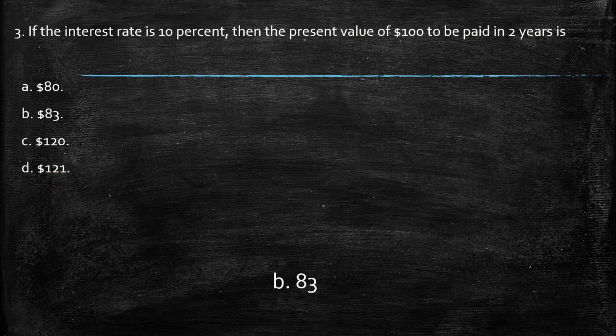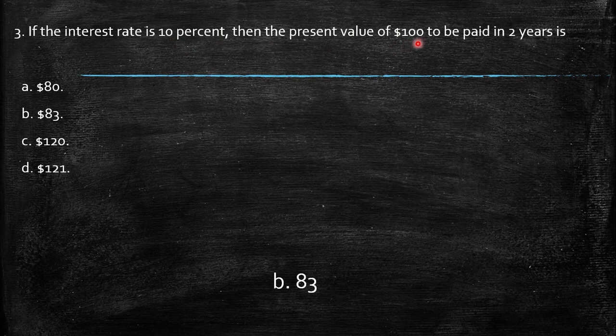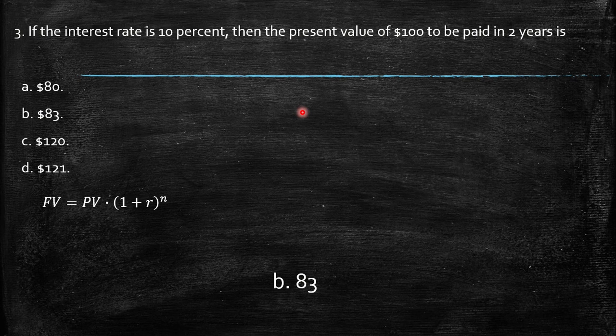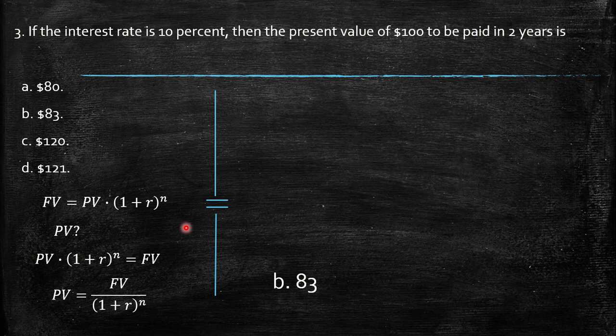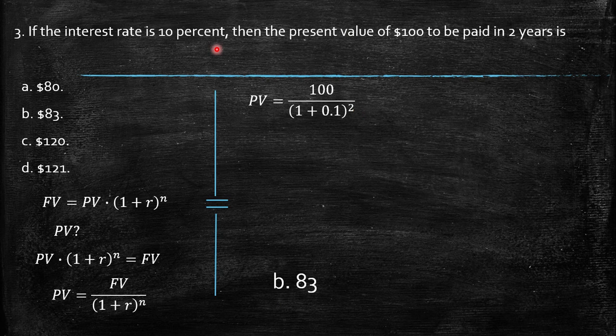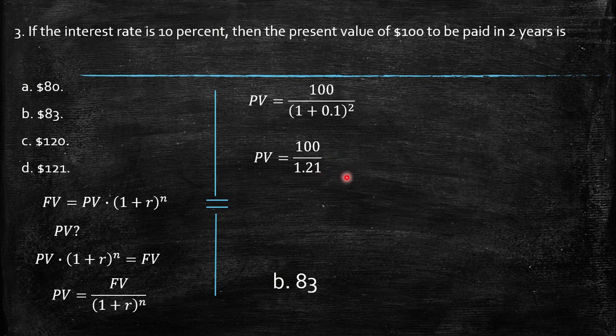Third, if the interest rate is 10%, then the present value of $100 to be paid in 2 years is... Again, we have the same equation. The present value equals 100 / (1.1)^2, which is 100 / 1.21, giving us exactly $82.64 or approximately 83. So B equals 83.